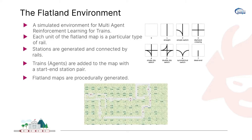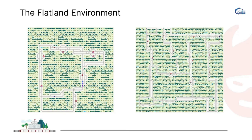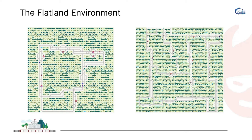Here are examples of how the Flatland environment looks. On the left there are much fewer cities and a smaller map, whereas on the right there are more cities and more tracks. This means that agents get to generalize on not only different positions of tracks but also different sizes of cities, making the problem even more general and realistic.